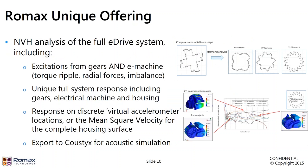So the unique offering from ROMAX in terms of software capability, we consider the excitations from the gears as originally we were able to. In addition, we can now consider the electric machine excitations. These are torque ripple, radial forces on the stator and also imbalance. We can look at the full system response, including the gears, electric machine and housing. We can look at, for example, the response at any node locations, which can represent a virtual accelerometer. That can then be used for a correlation with test data. We can look at mean square velocity. And we can also do an acoustic export.